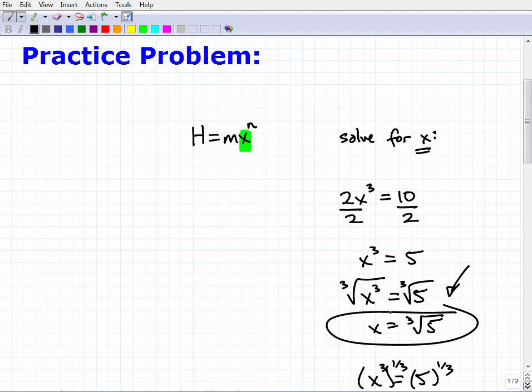Now, the first thing is, just look, I divided both sides of the equation by 2. So here I'm going to divide both sides of the equation by M. So I'm going to get H over M, and put those in grouping symbols, is equal to X to the N.